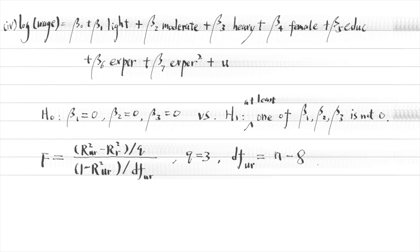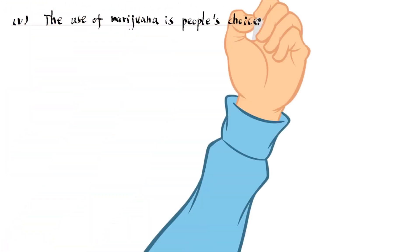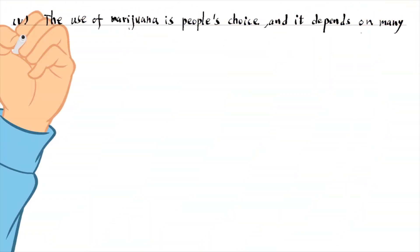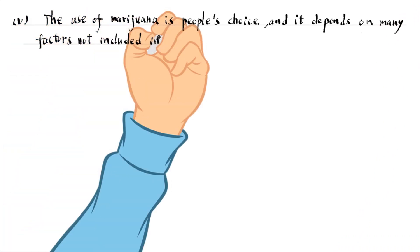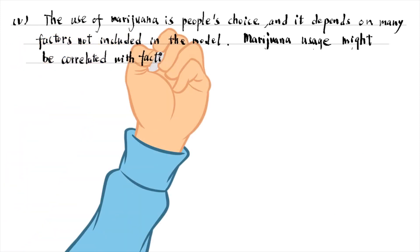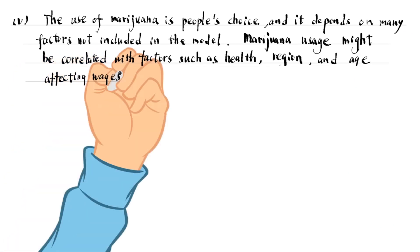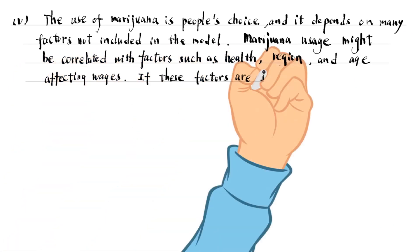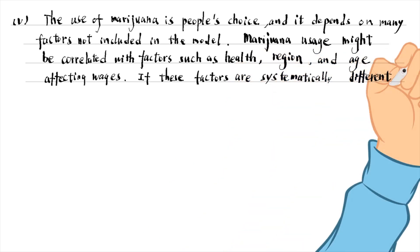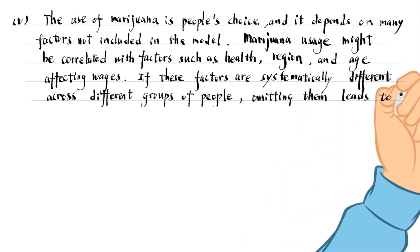For the last part, the use of marijuana is people's choice, and it depends on many factors not included in the model. Marijuana usage might be correlated with factors such as health, region, age, and family background affecting wages. If these factors are systematically different across different groups of people, omitting them leads to the omitted variable bias of the OLS estimates.